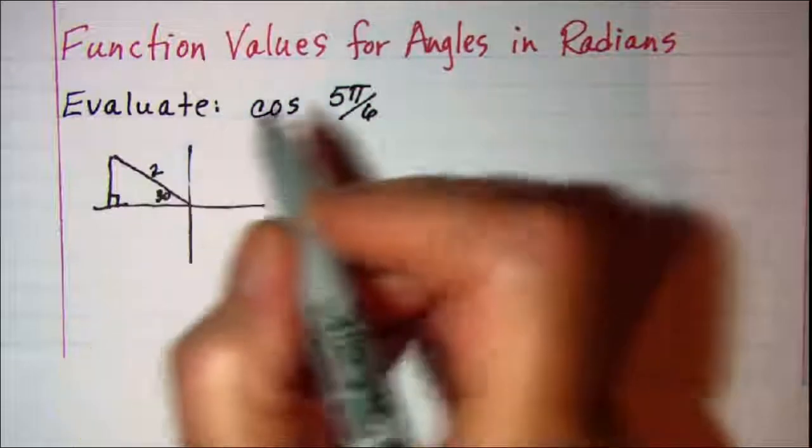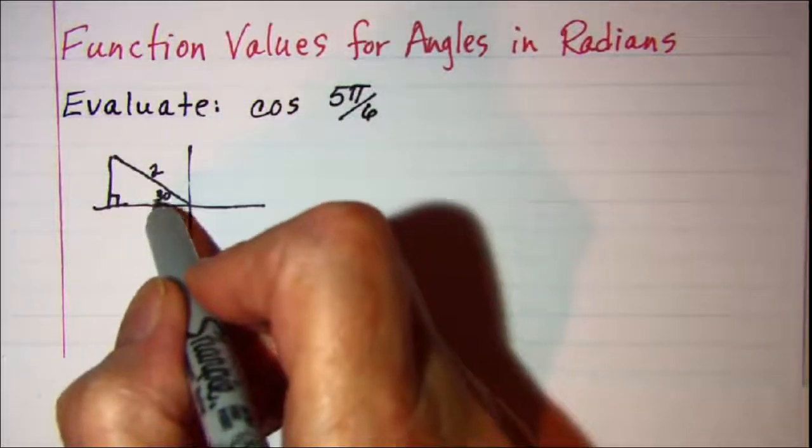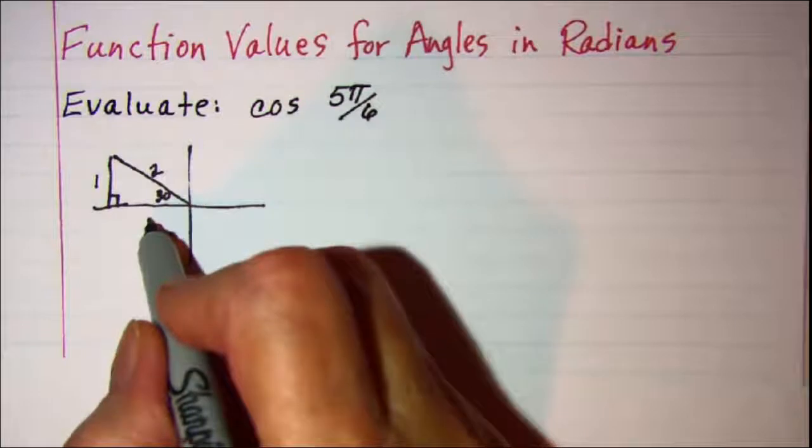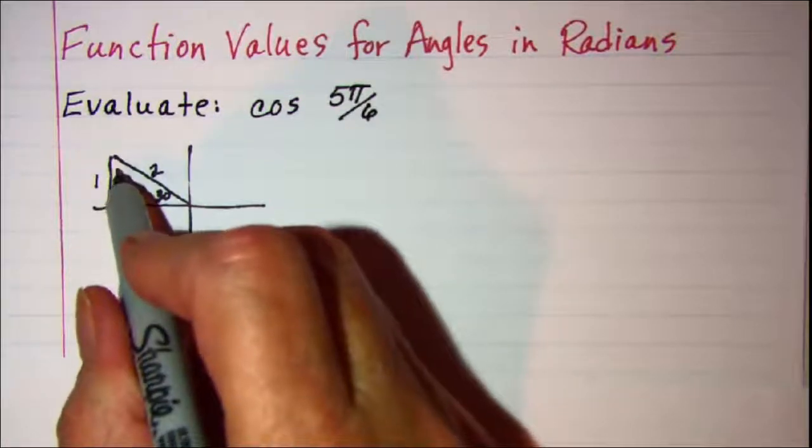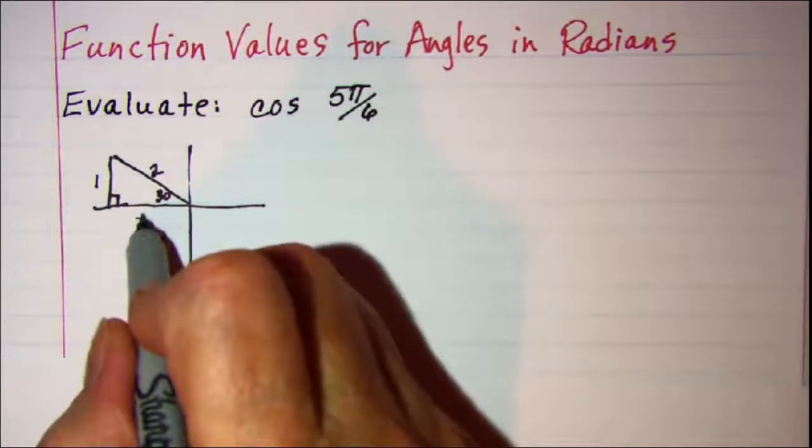My 2 would be the hypotenuse and then the side opposite the 30 is 1 and the side opposite the other angle which would be 60 will be root 3.